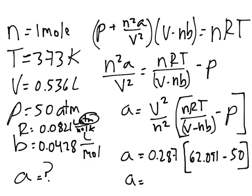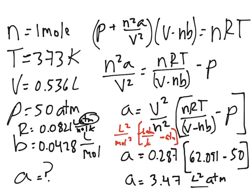So our a will be equal to 3.47. Now let's get the units. The V² over n² is liter squared, so we have liter squared over mole squared. nRT will be liters atmospheres, and V minus nb is just liters. So we'll have atmospheres minus atmospheres. So our units will be liters squared times atmospheres over moles squared. And for a, it will always be liters squared atmospheres over moles squared. And for b, it will always be liters per mole. And that's how you solve the problem using the Van der Waals equation.